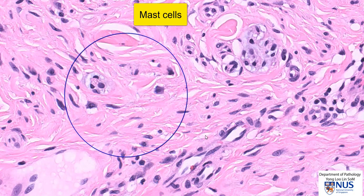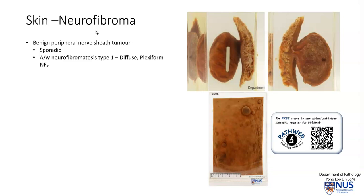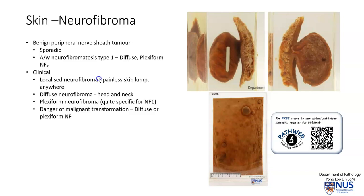Let's learn a bit more about neurofibromas. The neurofibroma is a benign peripheral nerve sheath tumor, and as mentioned earlier, the other very common benign peripheral nerve sheath tumor is the schwannoma, with a separate video on that lesion. Neurofibromas can either be sporadic, or they can occur in the setting of syndromes, the most well-known being neurofibromatosis type 1.